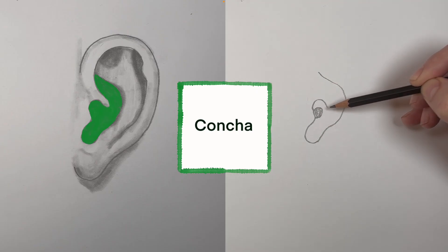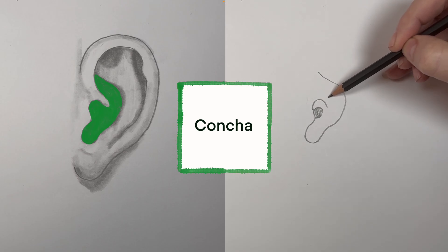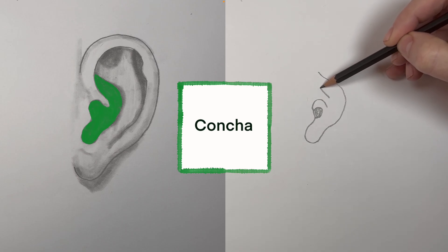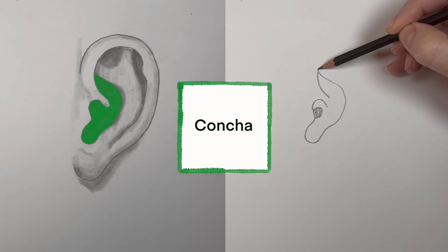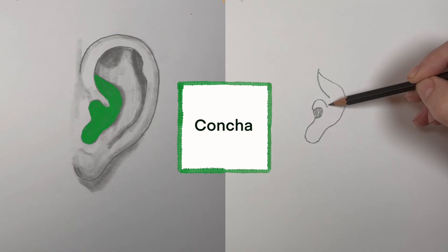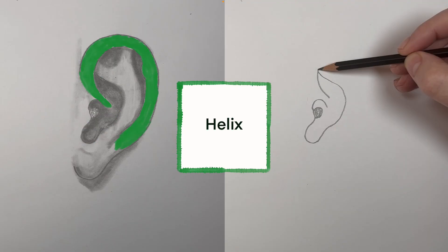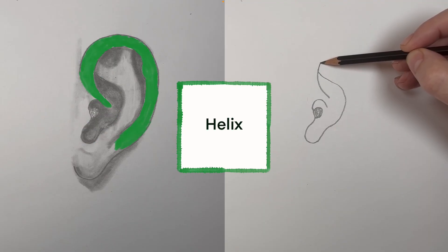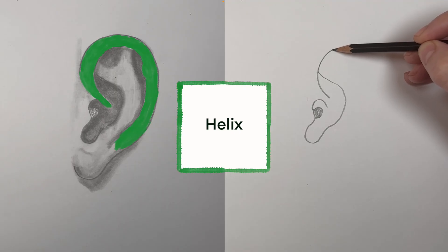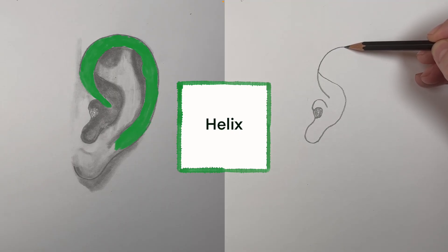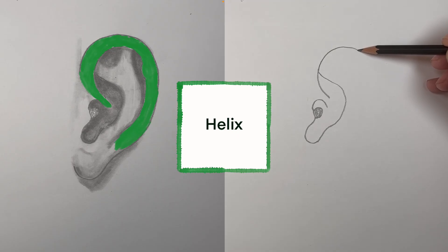Concha is Latin for shell. It's meant to describe the shape — kind of a shell shape or a bowl shape — that leads to the ear canal. Perhaps the best known part of the outer ear is the helix. Helix is Greek, it means spiral or coil, and it's that curved rim on the outer ear. It starts in the concha and curves all the way around.